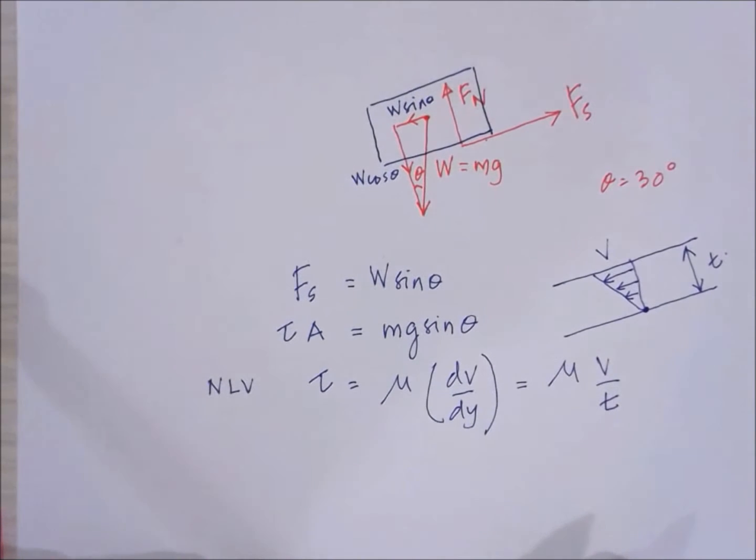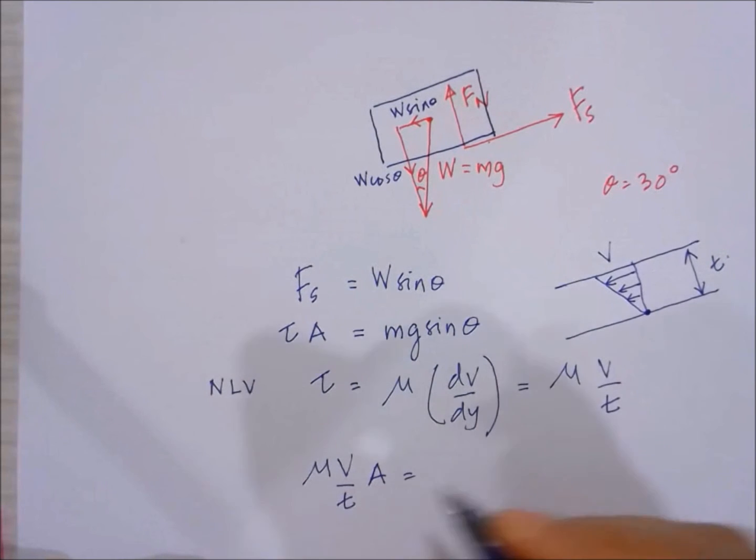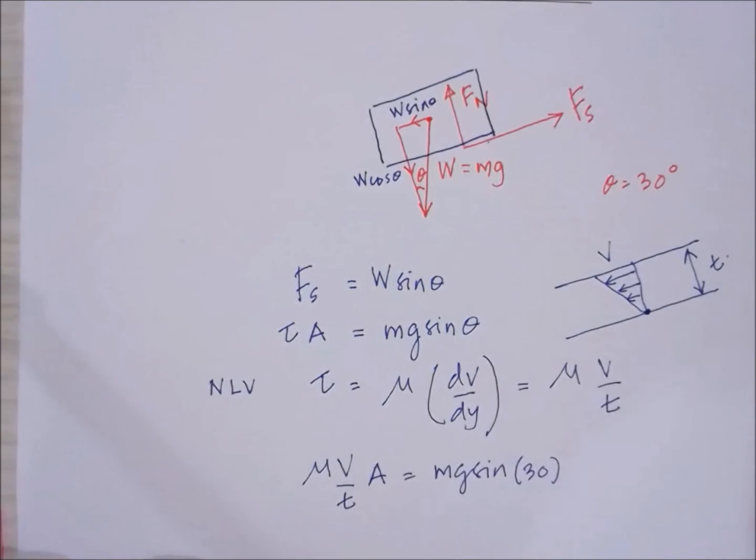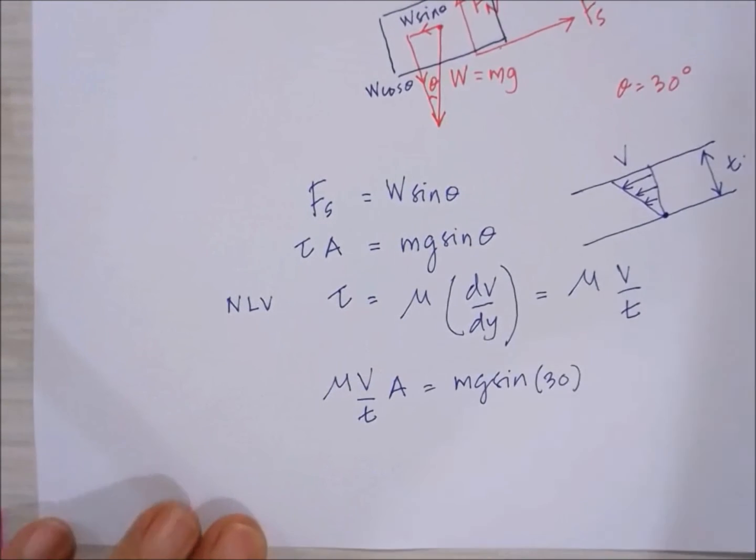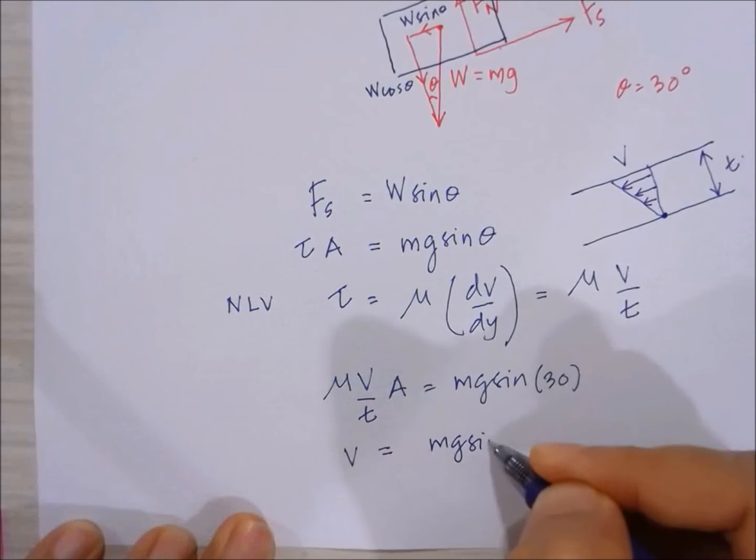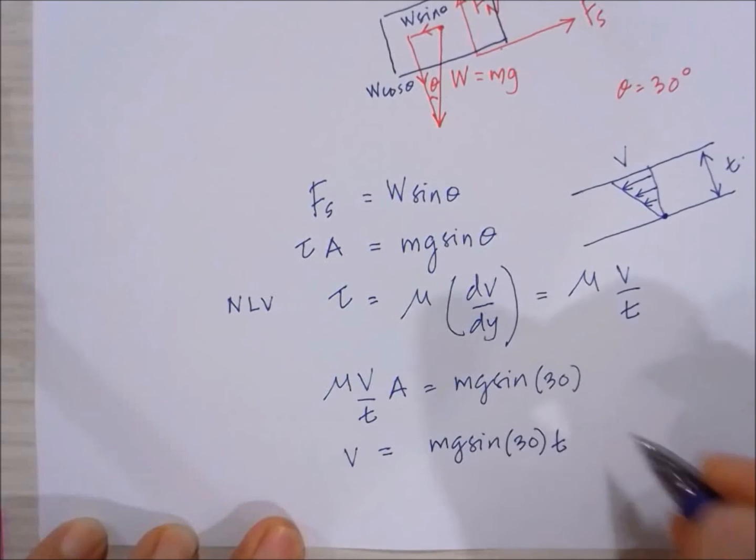Now we can substitute this into the equations. We have tau, so mu V over t multiplied by area must be equal to mg sin 30. From here we can see that we can calculate the V. So V is just equal to mg sin 30 multiplied by t divided by A mu.